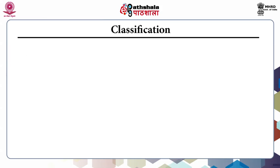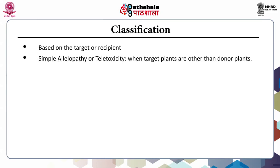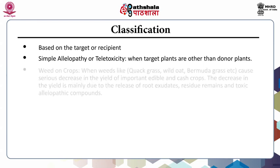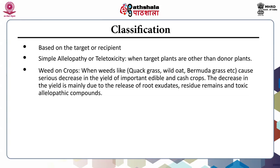Classification based on the target or recipient: Simple allelopathy or teletoxicity occurs when target plants are other than the donor plants. First is weed on crops — weeds like quack grass, wild oat, Bermuda grass, etc., cause serious decrease in the yield of important edible as well as cash crops. The decrease in yield is mainly due to the release of root exudates, residue remains and some toxic allelopathic compounds.